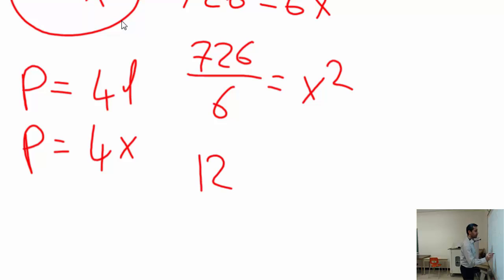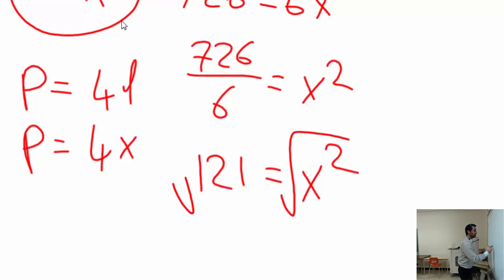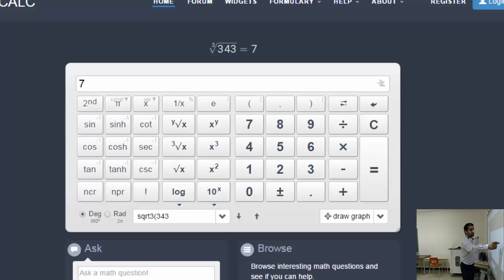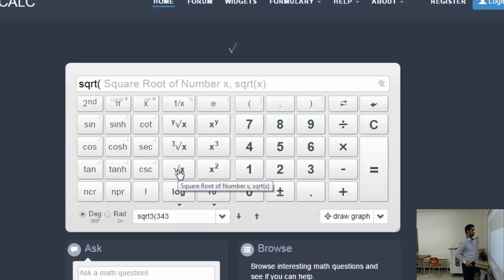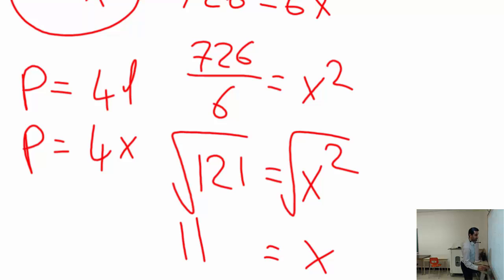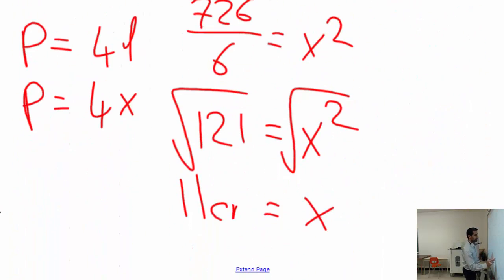726 divided by 6 equals 121, so 121 equals x squared. Since this is x squared and not x cubed, I only need the square root of both sides. Taking the square root of 121 gives x equals 11 centimeters.